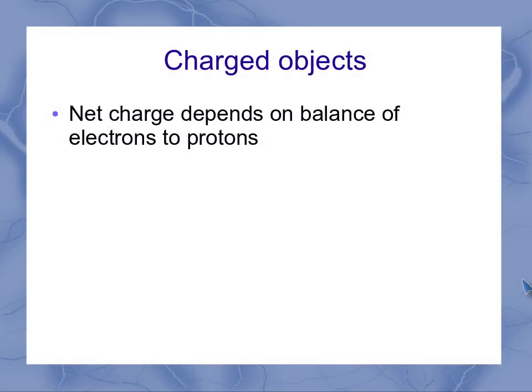If I've got a larger charged object, then the net charge on that object depends on the balance between the electrons and protons. Not the total number of electrons and protons, just the balance between the two. The equation we use to represent this is Q equals N times E. Q is our charge, N is the number of unbalanced charges, and E is our fundamental charge.